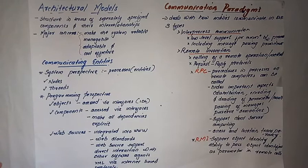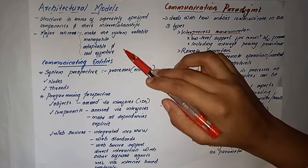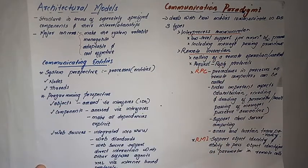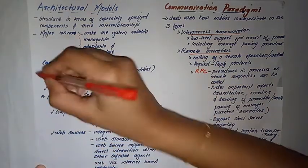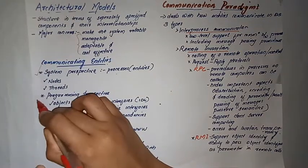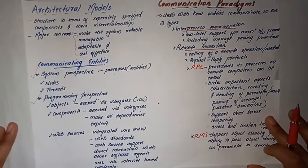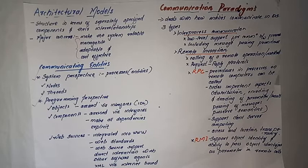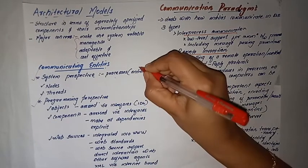This brings us to communicating entities in the architectural model. There are two perspectives on communicating entities. One is the programming perspective and the other is the system perspective. In the system perspective, there are processes, and processes are the entities that communicate with each other.